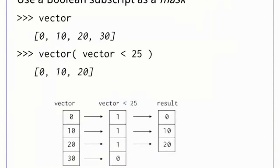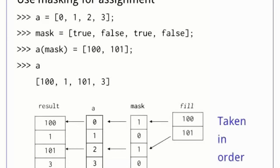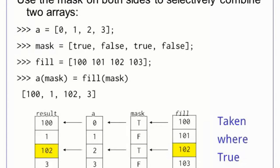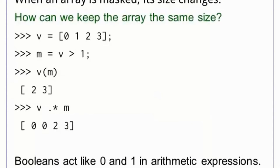Another term for an index from a comparison is a mask, because the Boolean array masks all the elements of a vector that fail the condition. We can use Boolean masking on the left side of assignment as well, though we have to be careful about its meaning. If we use a mask directly, elements are taken in order from the source on the right and assigned to elements corresponding to true values in the mask. Using a mask on both sides of an assignment has a different effect — corresponding elements of the array fill are assigned to A if the location meets the criteria in the mask. Sometimes, we want to replace values in a matrix with zeros without changing the size of the result. We can use the Boolean mask in element-wise multiplication to replace locations that are less than one with zeros.